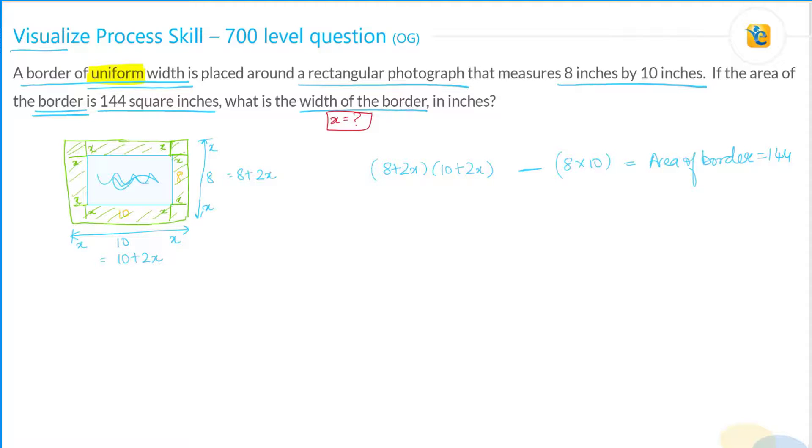Now, beyond this, you simply solve this equation and you get to the answer. So, here's the simplification of it and you notice that 80 and 80 gets cancelled out. What you're left with over here is 4x² + 36x - 144 = 0. You simplify it further. What you get is x² + 9x - 36 = 0.